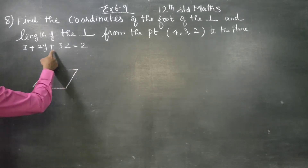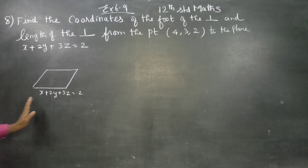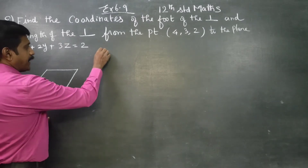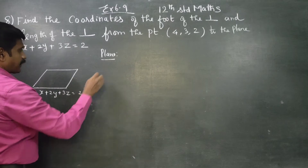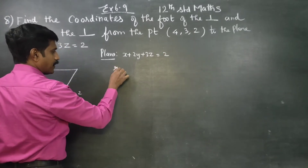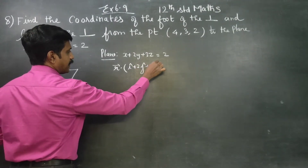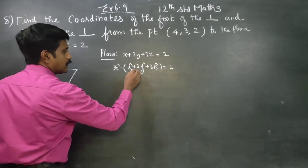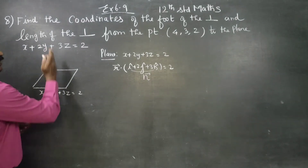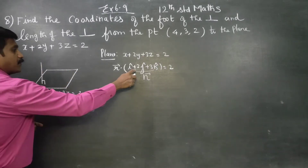Consider this plane: x plus 2y plus 3z is equal to 2. In vector form, r-vector dot (i plus 2j plus 3k) is equal to 2. The vector (i plus 2j plus 3k) is a normal vector — it is perpendicular to the plane. This is the n-vector.